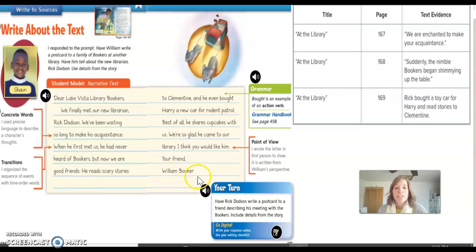And then over here, it says that the point of view. So Sean wrote his letter in first person to show that it was written from William's perspective. Okay.